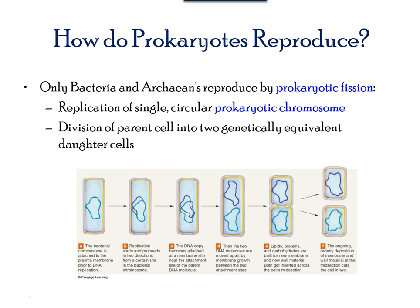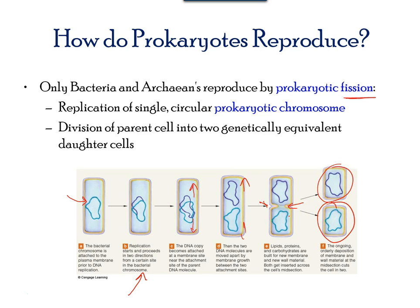Bacterial and archaean cells reproduce by fission — the splitting of the cell into two. The DNA present in prokaryotes is usually a single, circular chromosome. The chromosome loop replicates and starts moving apart. The cell then pinches inwards in the middle and eventually separates into two new cells, with each chromosome loop ending up in one cell.